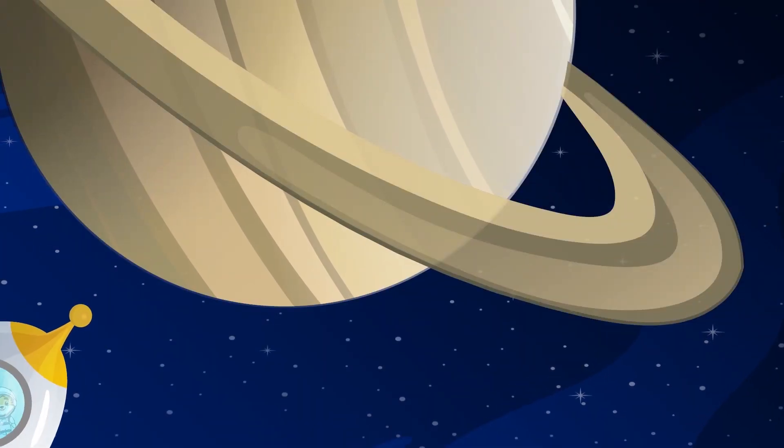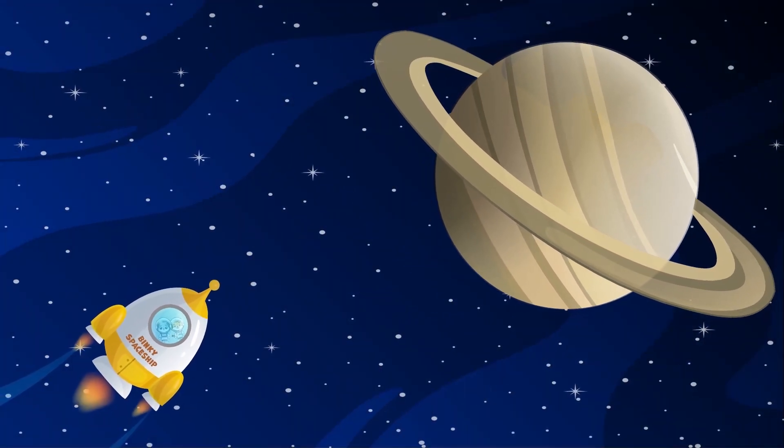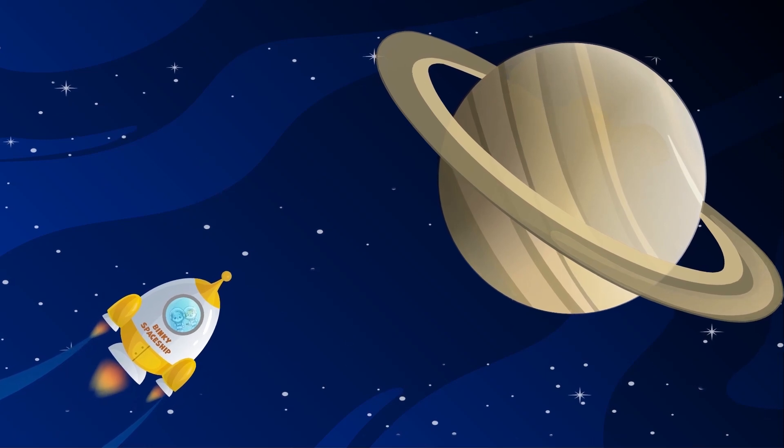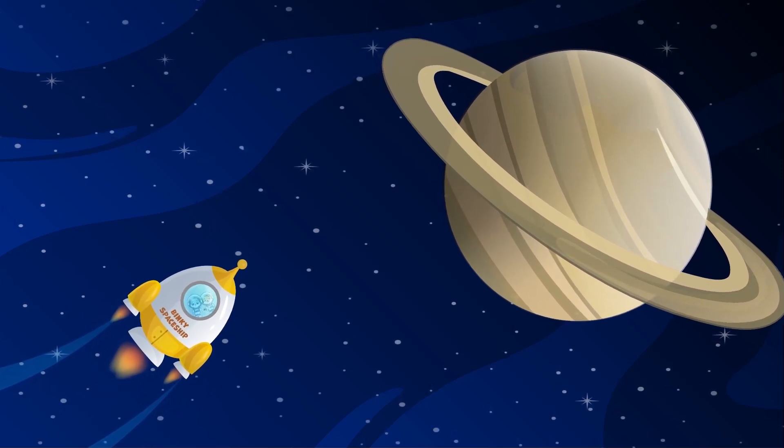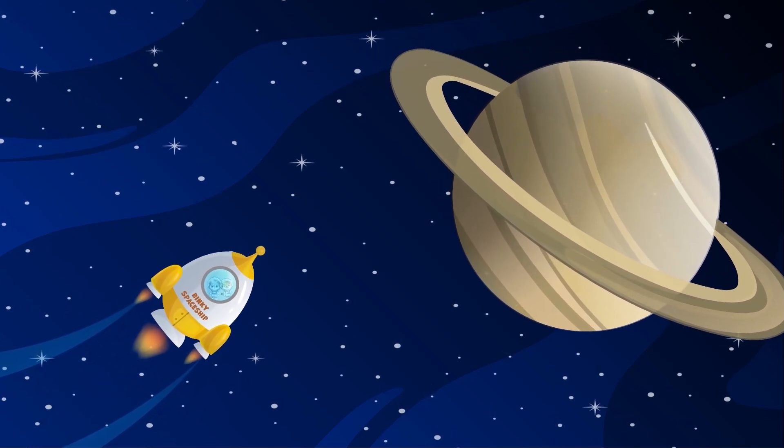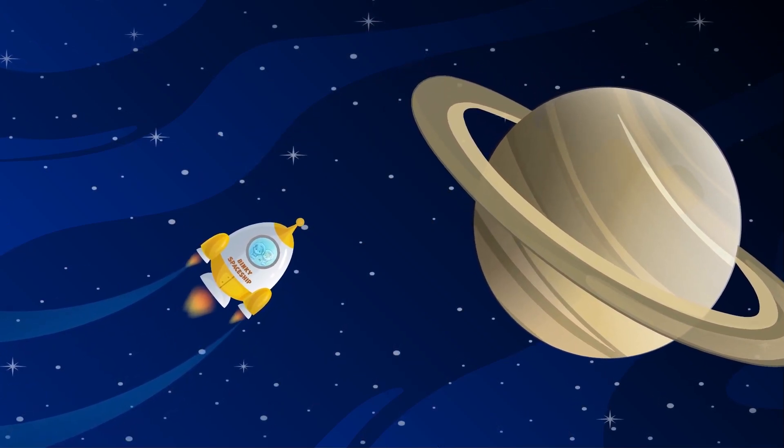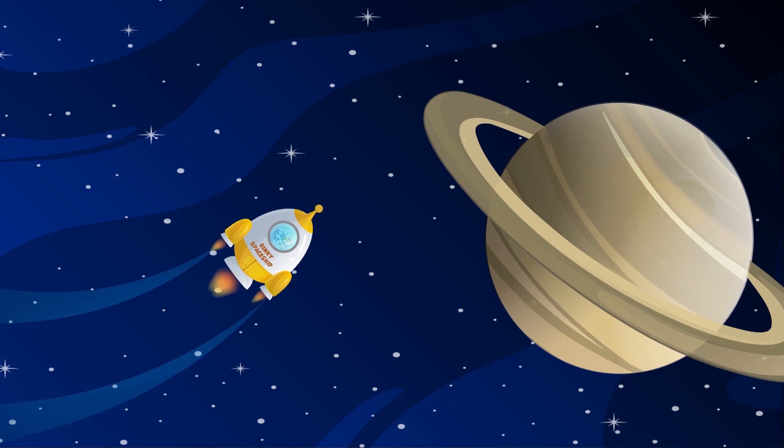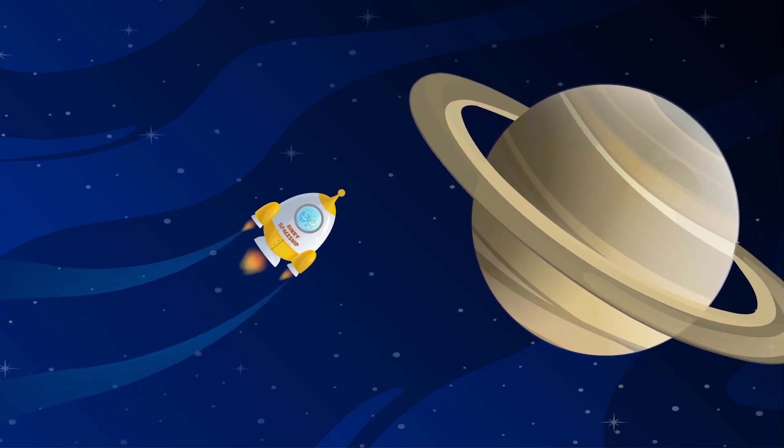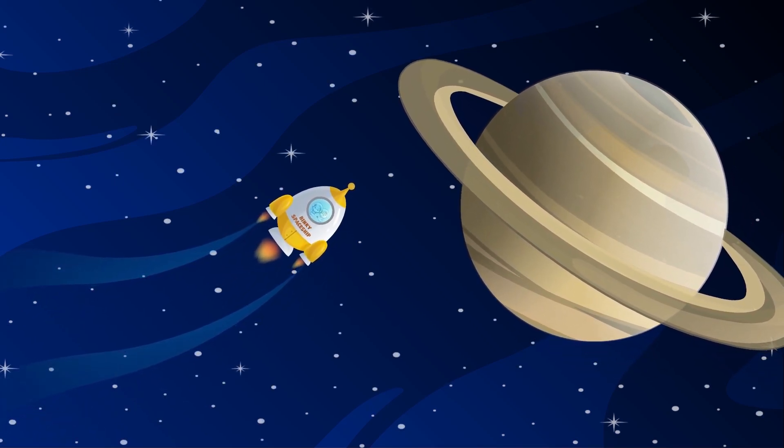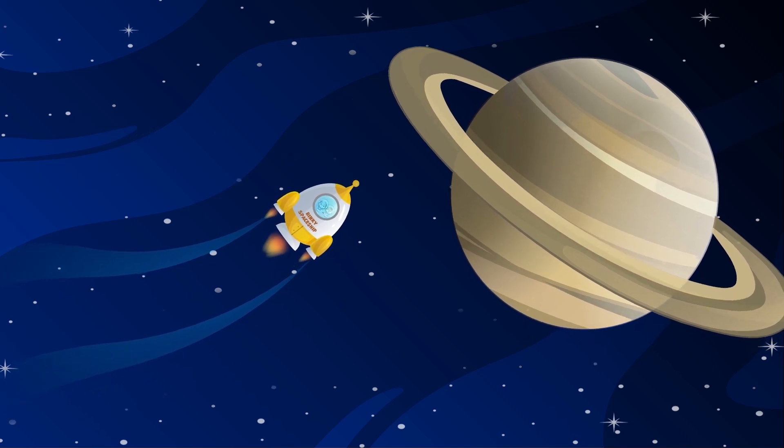The sixth planet from the Sun and second largest after Jupiter is Saturn. Saturn can easily be recognized by its rings, which are believed to be pieces of comets, asteroids, or destroyed moons that broke up before they reached Saturn and were torn apart by Saturn's powerful gravity.